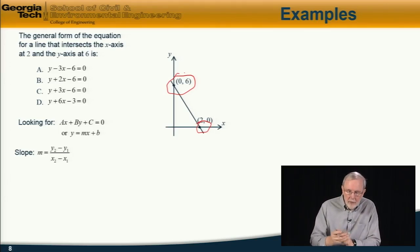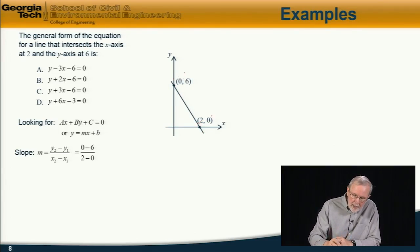So, y2 is 0, y1 is 6, x2 is 2, x1 is 0. So, the slope of the line is -3.